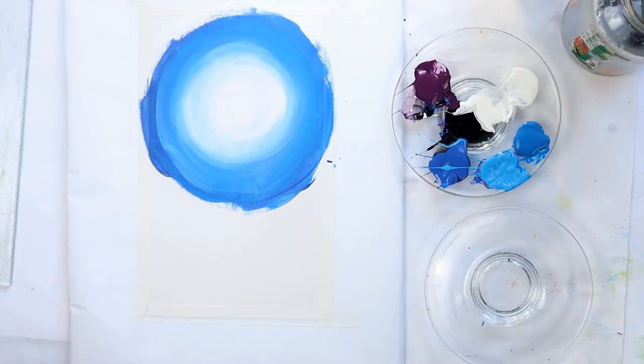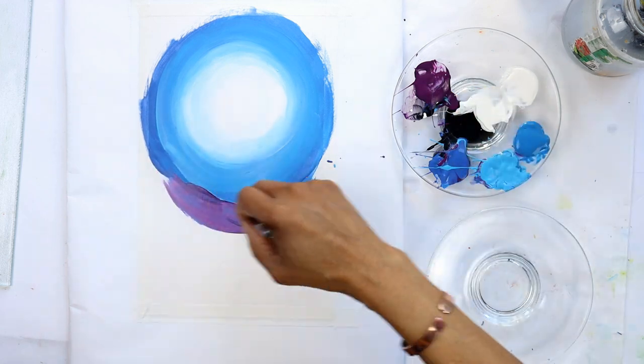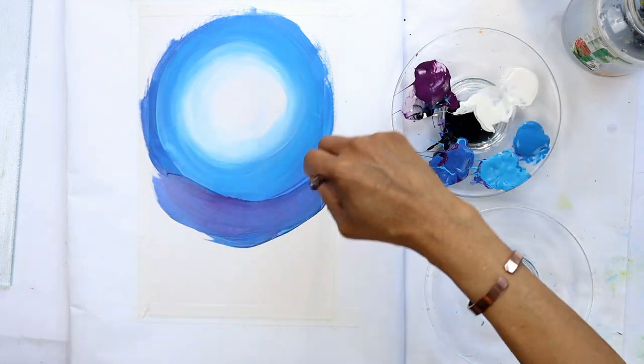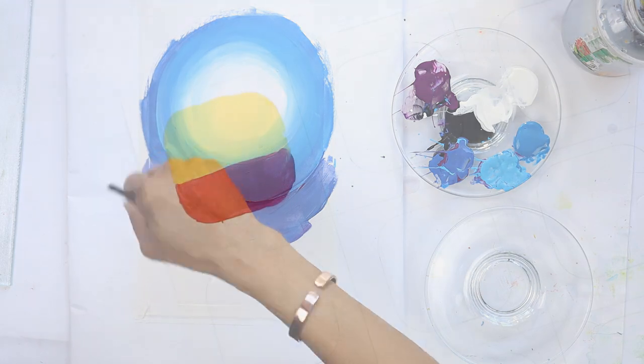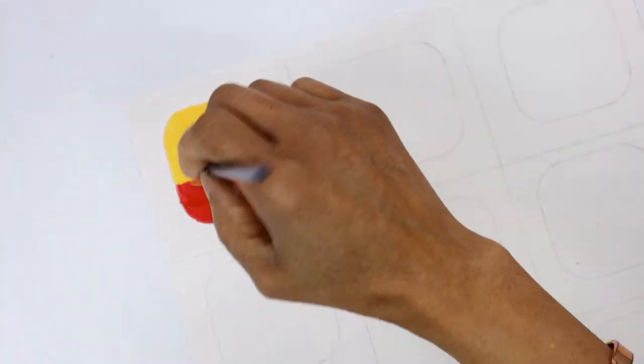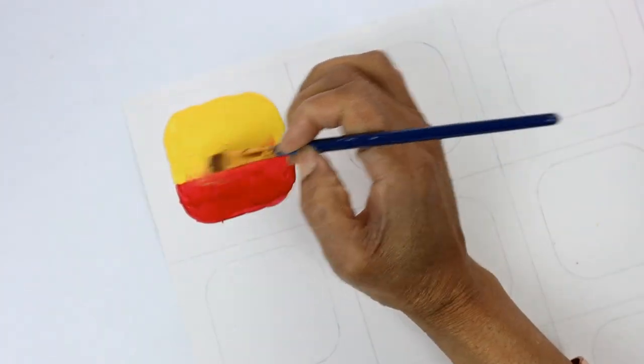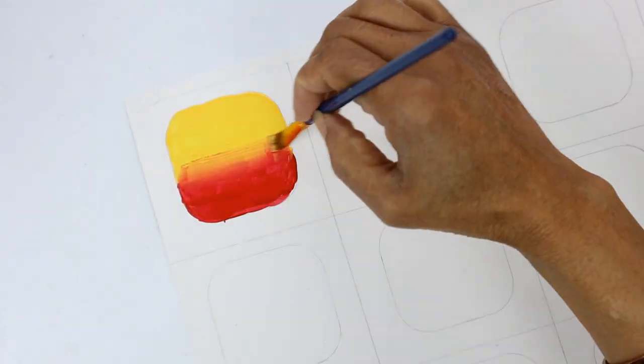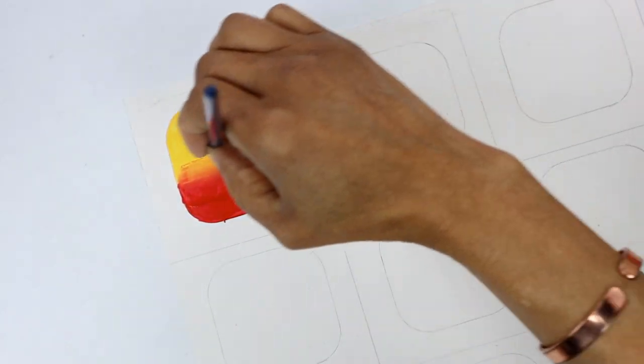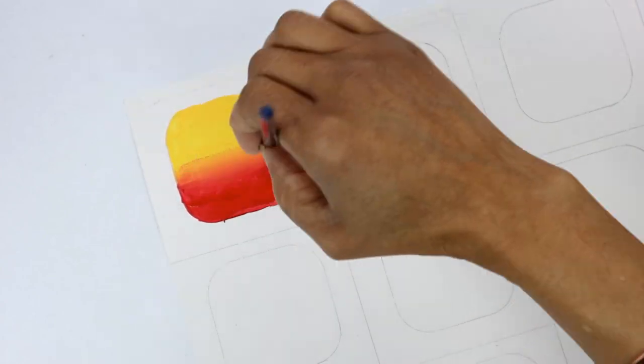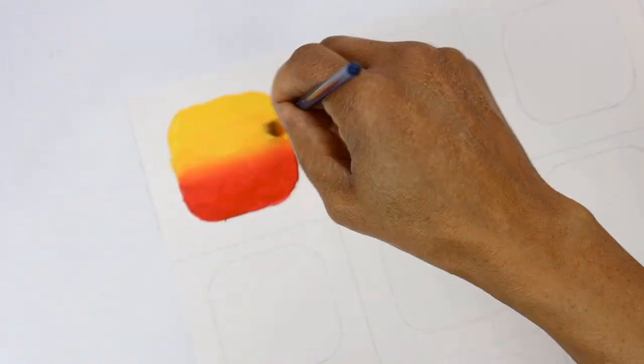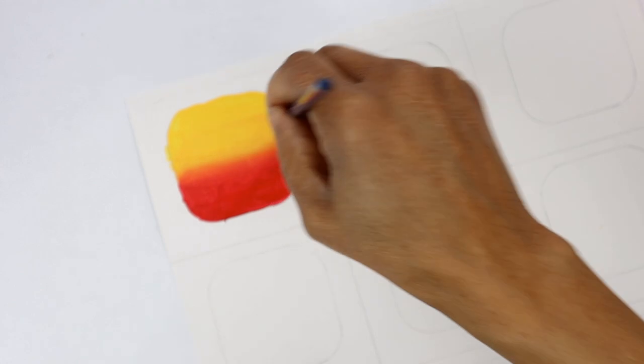Remember to use a clean brush when you're blending. Make sure it's clean and dry and just brush it gently between the two colors to get a smooth transition. Here's where the larger house paintbrush, as I like to call it, comes in.